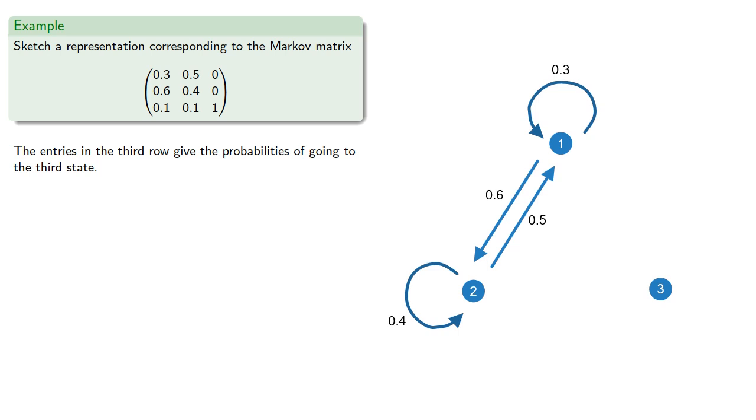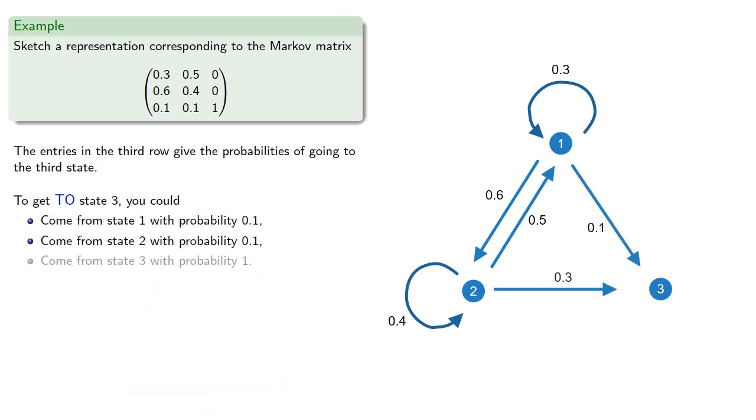The entries in the third row give the probabilities of going to the third state. So to get to state 3, we could... And notice that state 3 has a peculiar property, which is that if you ever get there, you're stuck there. There's no way out. We call this an absorbing state.